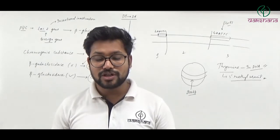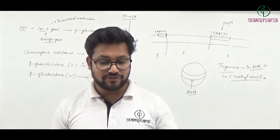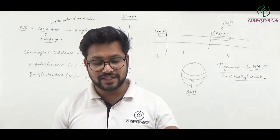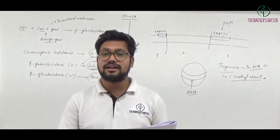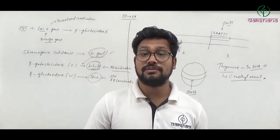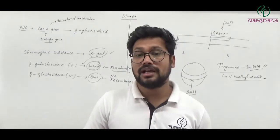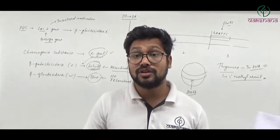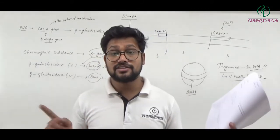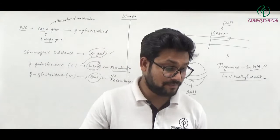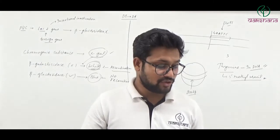Question number forty-one: According to Mendel's law of segregation, the ratio of F2 generation is what? The phenotypic ratio asked here — for dihybrid cross — is 9:3:3:1. Even in dihybrid cross you can apply law of segregation, as it is the universal law. The law of segregation, not law of dominance, is the universal law. Question number forty-one's second option is the right answer.